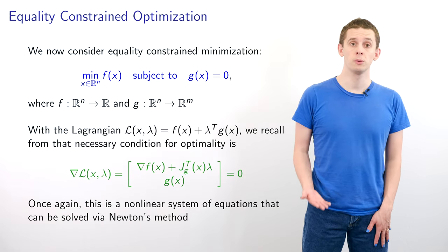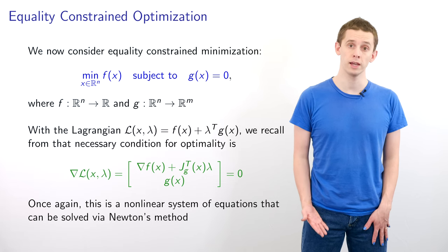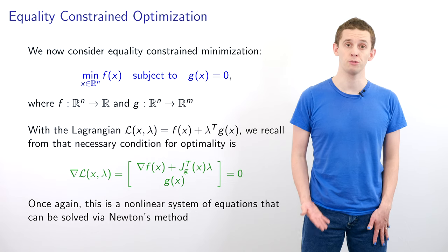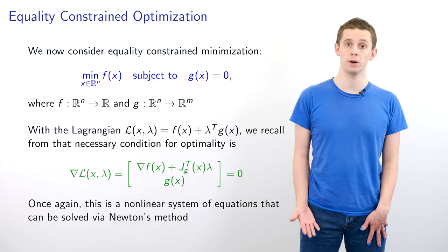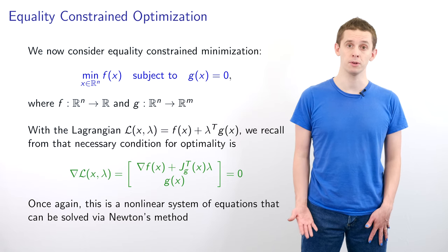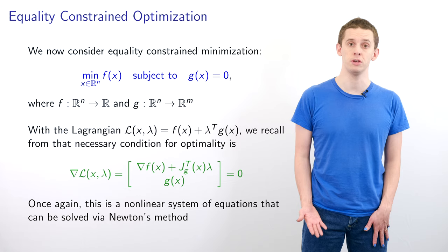In a previous video we saw that we could solve this problem mathematically by introducing a Lagrangian, that's a function of x and an m-dimensional vector lambda of Lagrange multipliers. We define L(x, λ) = f(x) + λ^T g(x).